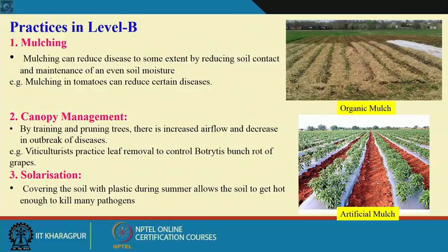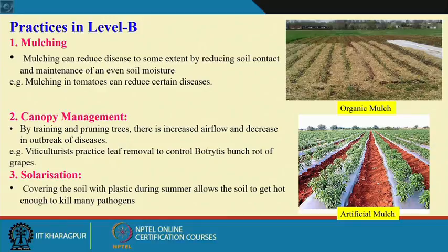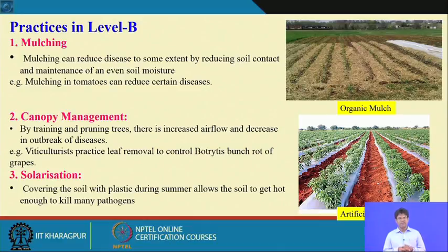Canopy management means training and pruning trees, especially for orchard crops. Dense canopy does not allow sunlight to enter and restricts air flow, making trees more susceptible to pest and disease. Regular trimming and pruning increases air flow and minimizes disease outbreak. For example, leaf removal controls Botrytis bunch rot of grapes. Sanitation through regular pruning is an important organic farm practice.